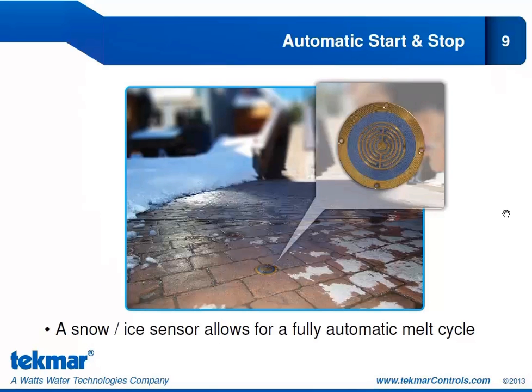Our other option is automatic start and automatic stop. In this case, a sensor detects moisture to initiate a melt cycle, and it also detects when the sensor is dry, at which point the melt cycle automatically stops. There is no predicting in this scenario — the sensor has the intelligence to operate the system exactly when it needs to be operated.